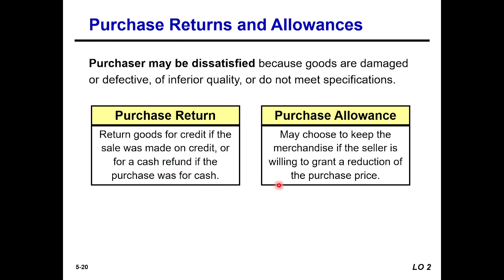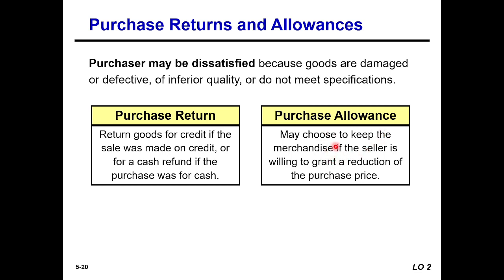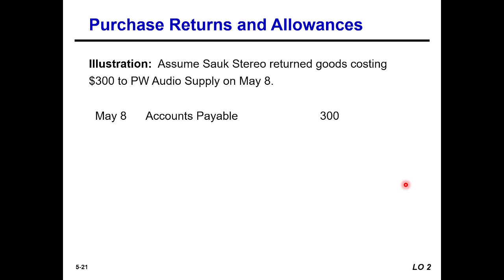A purchase allowance occurs when the buyer keeps the merchandise but the seller is willing to grant a reduction of the purchase price. So there are two options: number one, purchase return — goods are returned to the seller if found damaged, defective, or not meeting specifications. Number two, purchase allowance — the seller grants a reduction in the purchase price and the buyer keeps the goods.